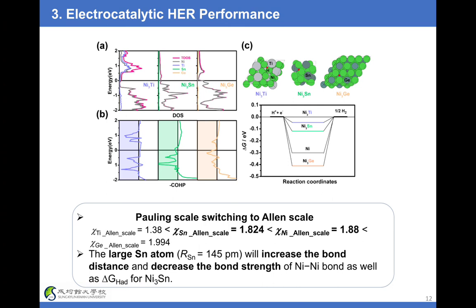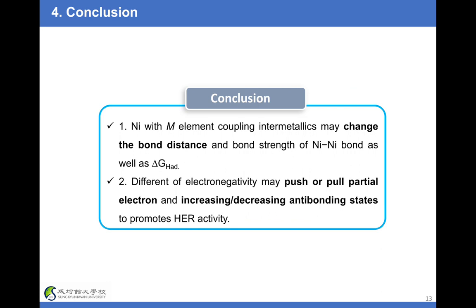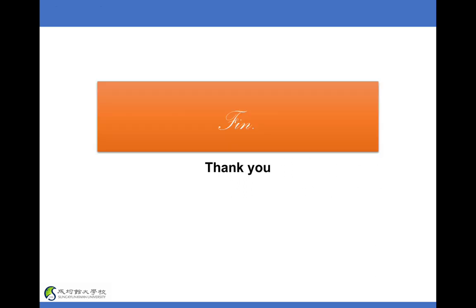In addition, the large atomic radius of Sn will increase the bond distance and decrease the bond strength of the nickel-nickel bond, as well as the hydrogen adsorption energy for Ni₃Sn. In this work, we can conclude that coupling nickel with metal elements in intermetallics may change the bond distance and the bond strength of the nickel-nickel bond as well as the hydrogen adsorption energy. Furthermore, different element electronegativity may shift the d-band electrons and increase or decrease the antibonding state to promote HER activity. That's all. Thank you.